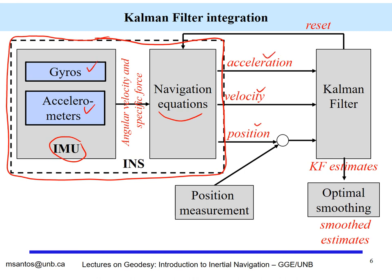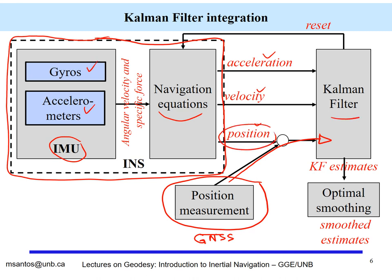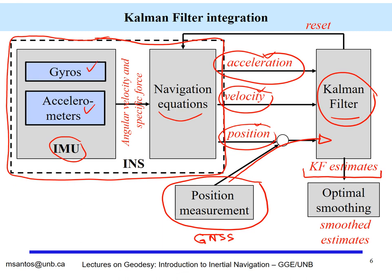That yields velocity, position, and acceleration. Integrating with an external source — for example, position given by GNSS — the GNSS position comes into the Kalman filter along with position and velocity derived from the accelerations. For every epoch this process happens, and the Kalman filter produces estimates of velocity and position. Post-processing can be done using smoothing, which is basically a low-pass filter. There is also a feedback loop from the Kalman filter to feed the navigation equations.